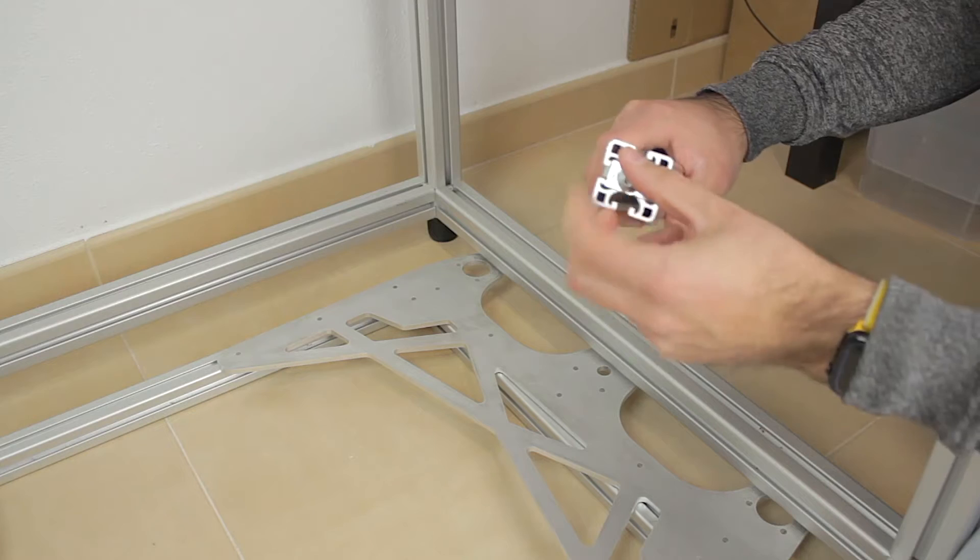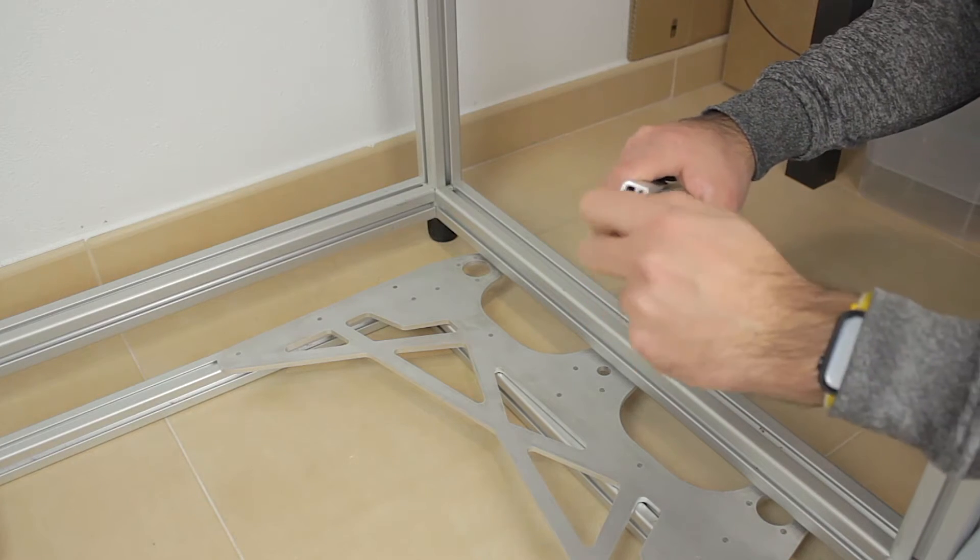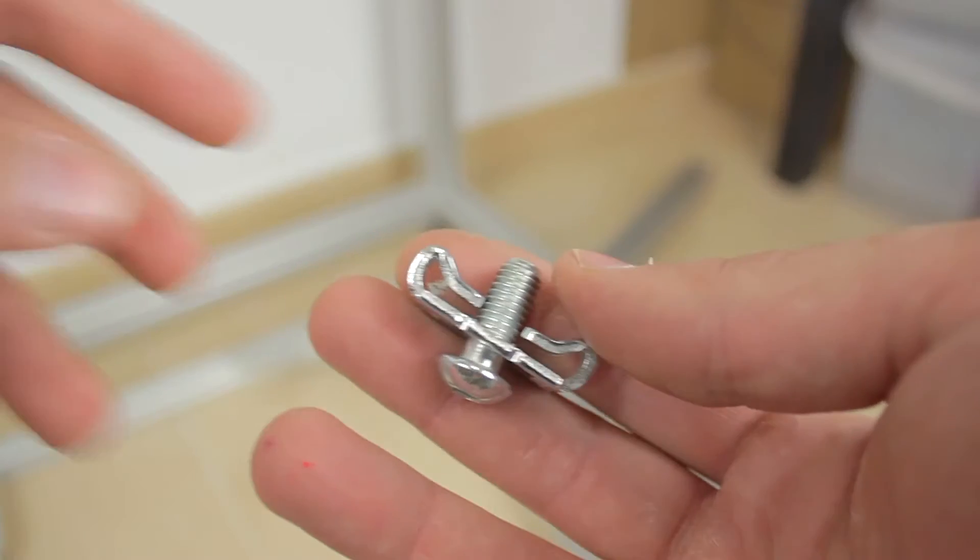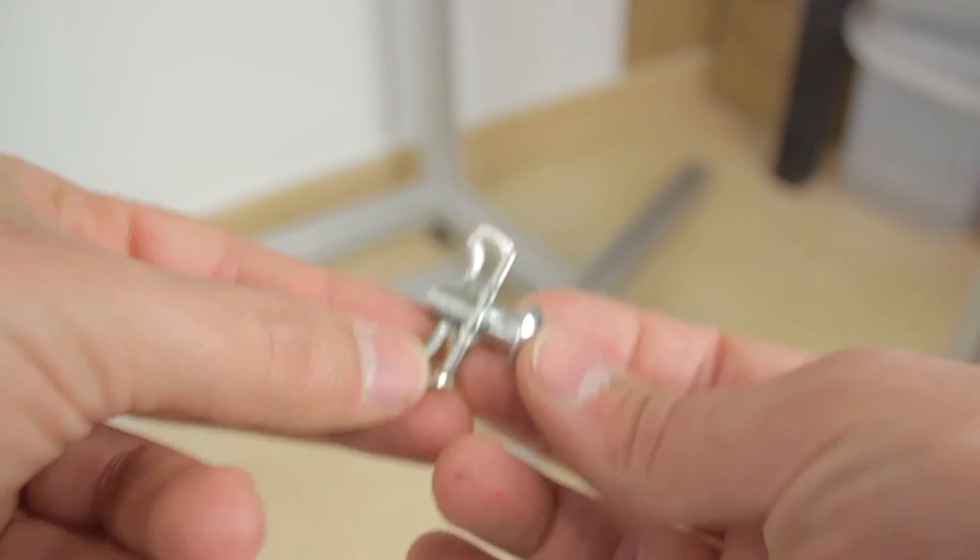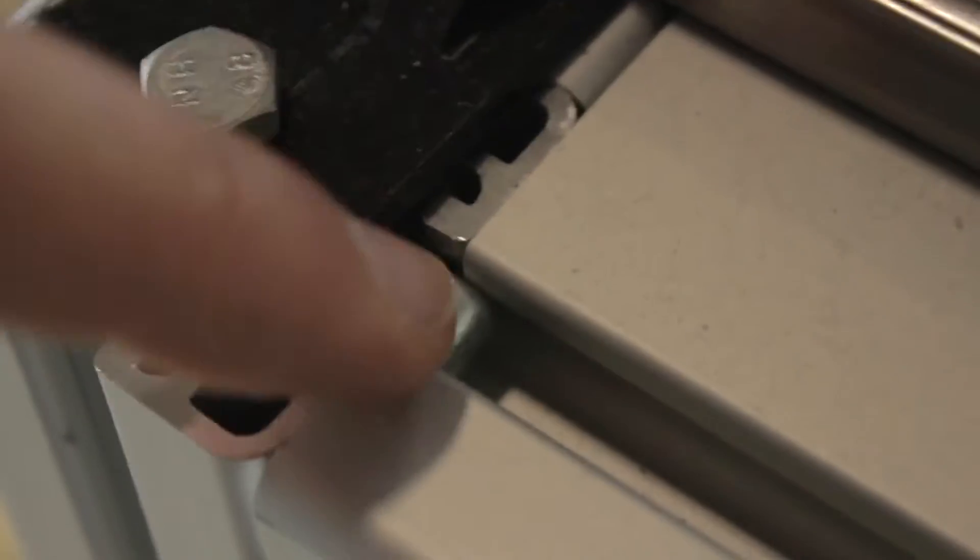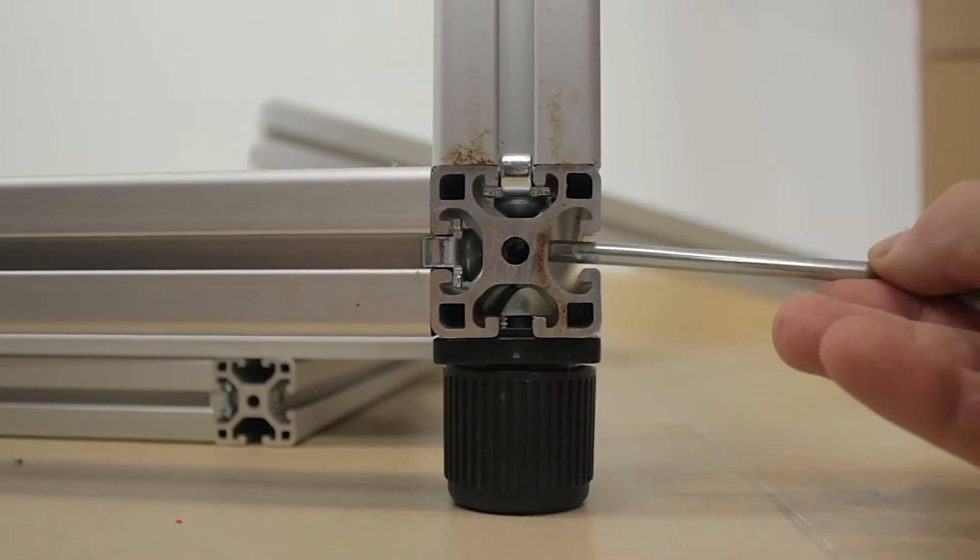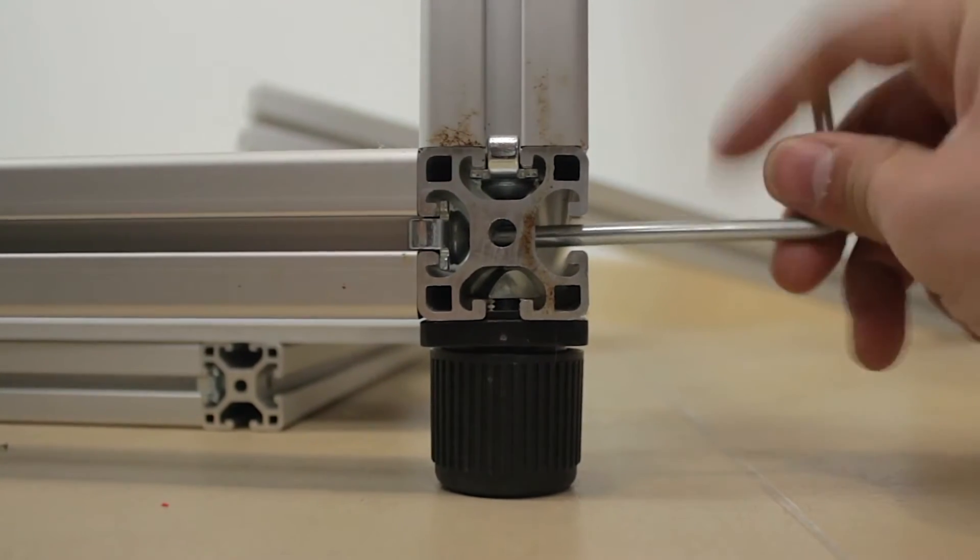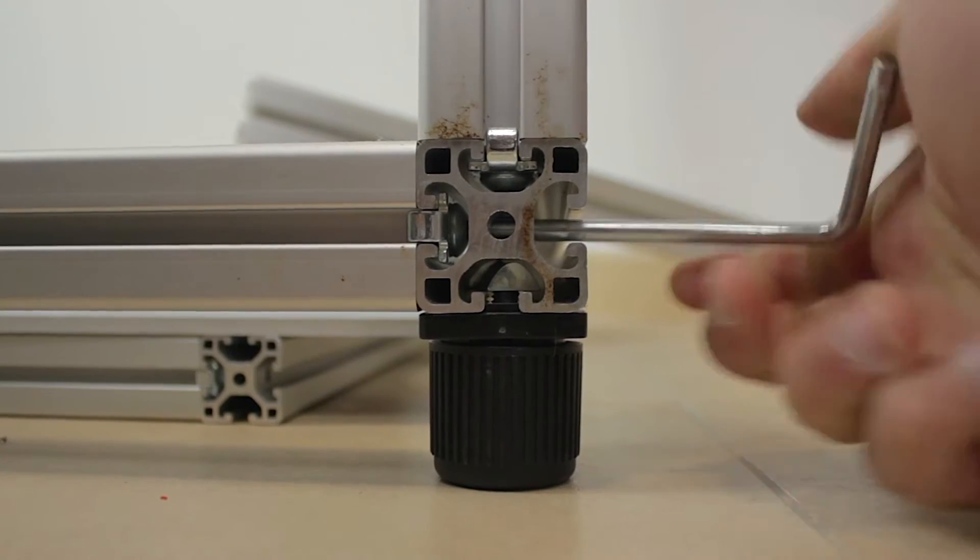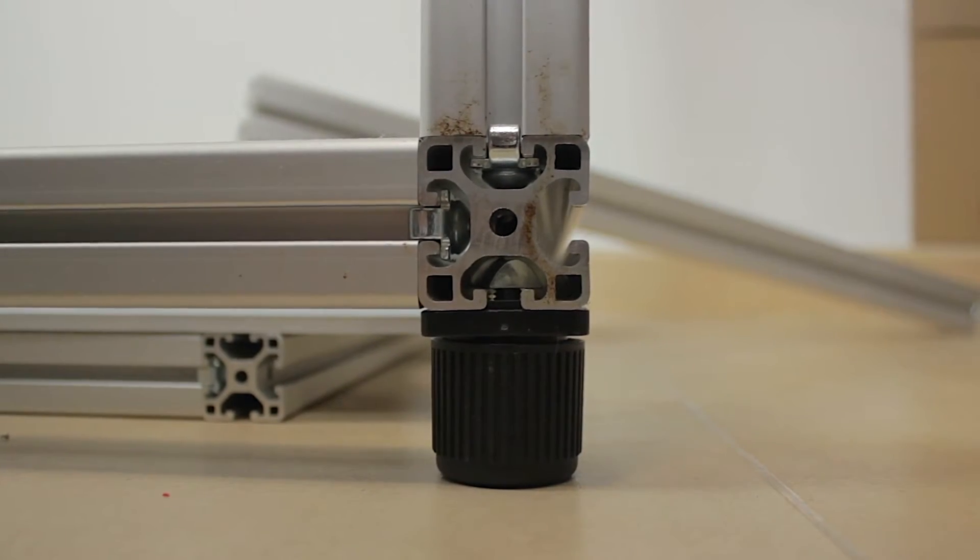They are going to be attached to the structure using these fasteners that Synerges provided a long time ago. They are composed by the bolt and the fastener itself and we used them in all the fixing points of the main structure. But the key here was that the profiles were precision drilled by Synerges before delivery so we were able to assemble the structure very easily.